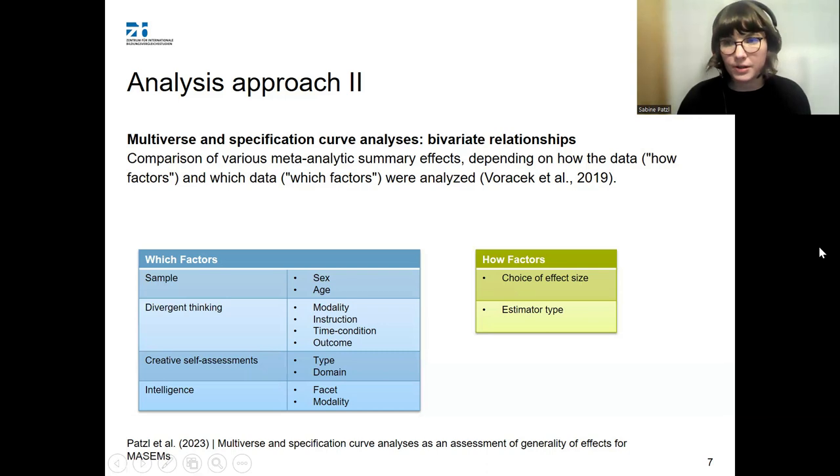When doing a multiverse analysis, these different factors, which I called moderators before, are actually called which factors, as you're thinking about which data could possibly have been analyzed in the primary studies. You're combining all these different which factors and the subgroups. For example, whether a female sample was used, children were investigated, fluency was reported as an outcome, and so on.